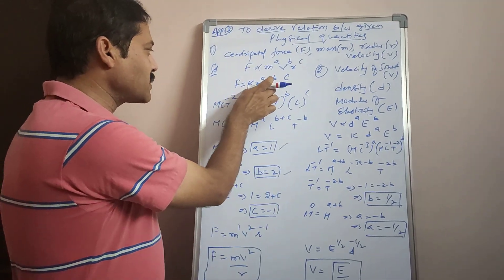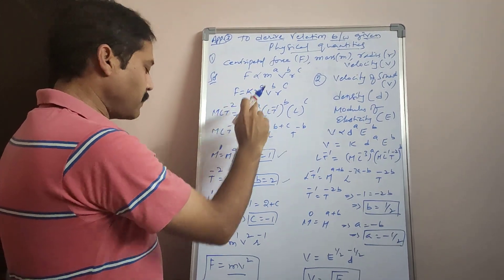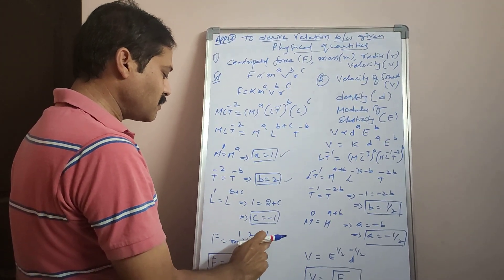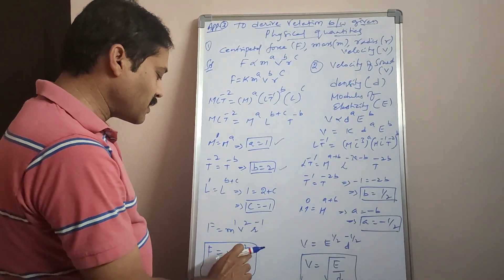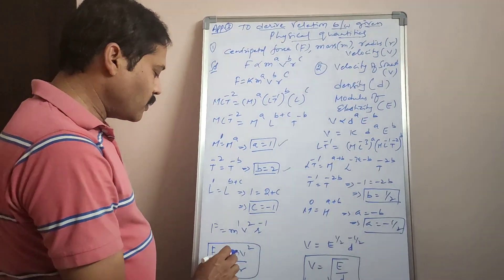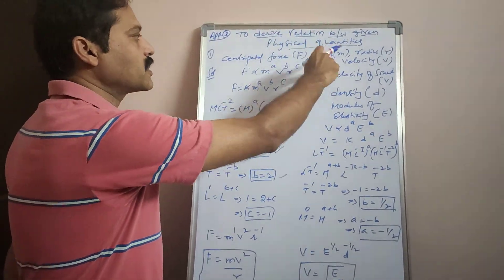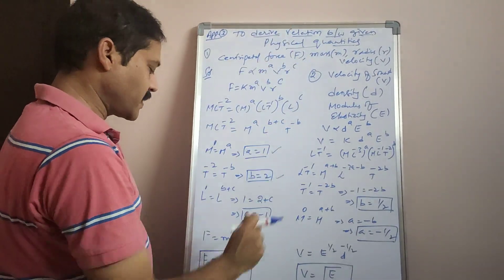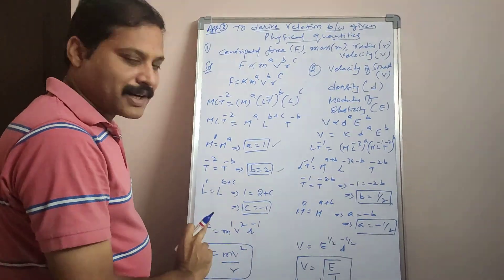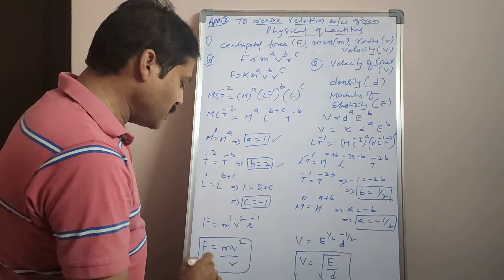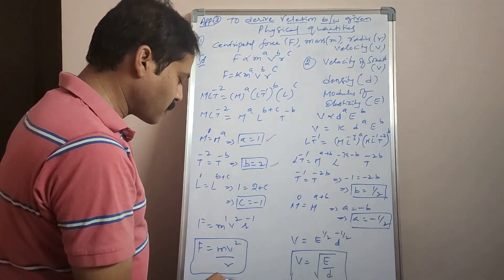Substituting these values: F = M power 1, V power 2, R power −1. Since R to the power −1 equals 1/R, the centripetal force acting on a particle of mass M moving with velocity V along a circular path of radius R is F = MV²/R. This is the derived relation between these physical quantities.